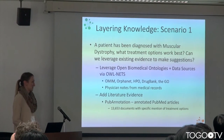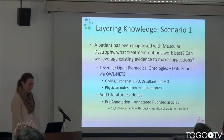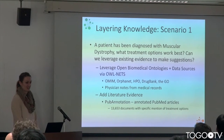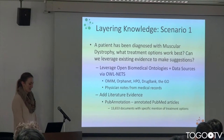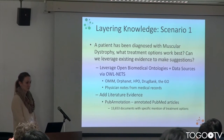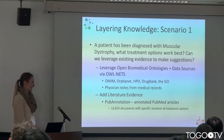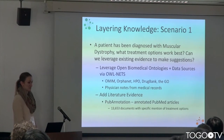The next steps are about getting at different ways we can layer knowledge to make suggestions. For example, a patient has been diagnosed with muscular dystrophy — a disease that has a lot of different treatment options. What do you recommend would work best for them? Can we leverage existing evidence to make better suggestions? We can leverage open biomedical ontologies and data sources, and with OWL-NETS put them in a graphical form that we can integrate with other data.